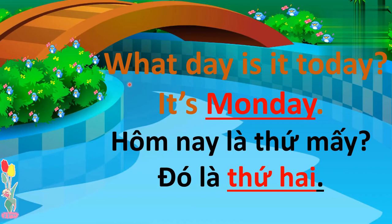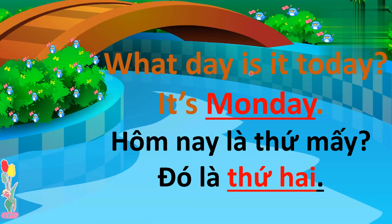Vậy khi chúng ta muốn hỏi hôm nay là thứ mấy, ta sẽ có mẫu câu là: What day is it today? Và từ 'is it' chúng ta có thể đọc vần lại là 'is it', và chúng ta đọc nguyên câu là: What day is it today? Sau 'is' chúng ta cộng vào phía sau là một thứ nào đó trong tuần.